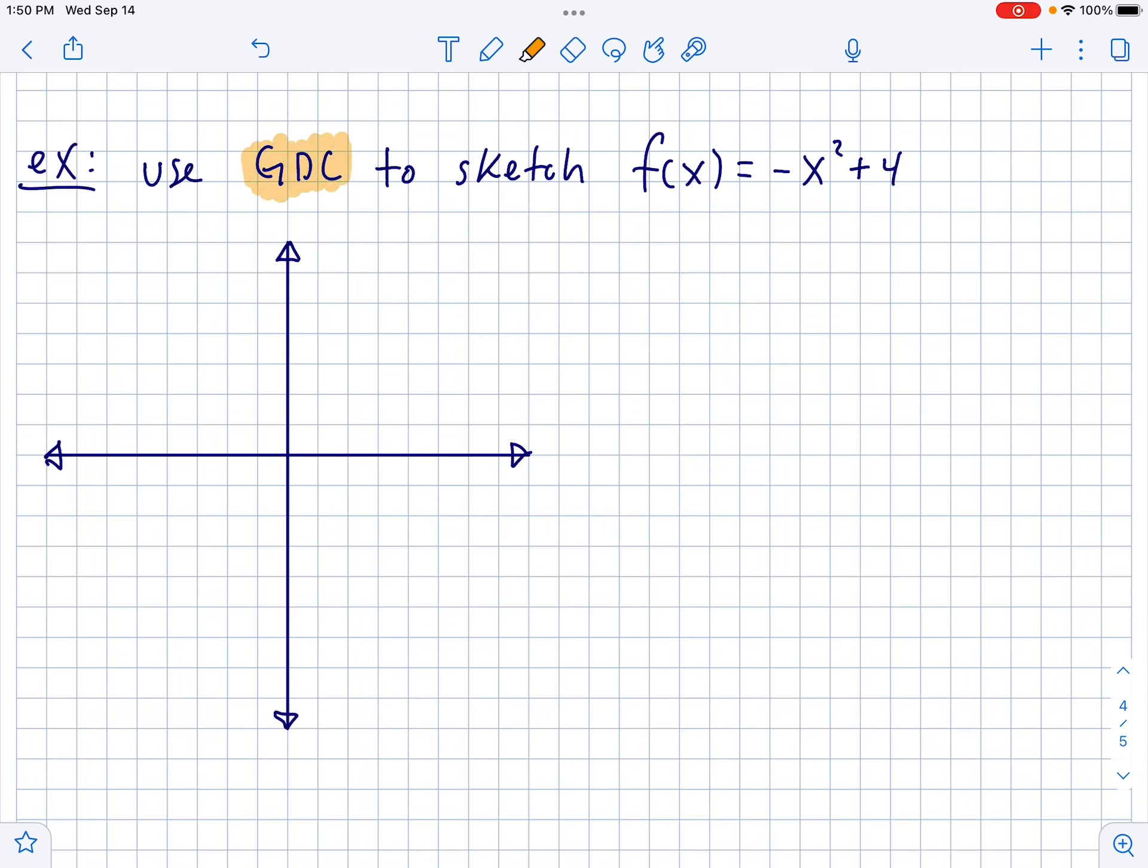So, we're going to use our GDC to sketch negative x squared plus 4. Now, down the road, you guys should probably know, not yet, after we do transformations, that this turns a parabola upside down and then this shifts it 4 up. So, using your GDC, you should see that the vertex of this parabola is at 0, 4. And then, it opens downward like this. I don't necessarily care what the x and y intercepts are right now. Like, on my graph, they came out to about negative 3 and positive 3. That might not be true. I guess, here, I'll punch it in my calculator and see what I get.